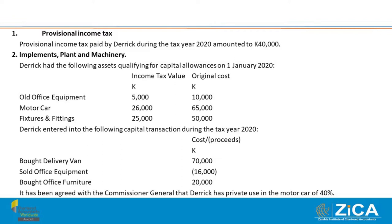Implements, plant, and machinery: Derek had the following assets qualifying for capital allowances on 1st January 2020, with columns for income tax value and original cost — old office equipment, motor car, and fixtures and fittings. Capital transactions during tax year 2020 include buying a delivery van, selling office equipment (proceeds indicated in brackets), and buying office furniture. It has been agreed with the Commissioner General that Derek has 40% private use of the motor car.